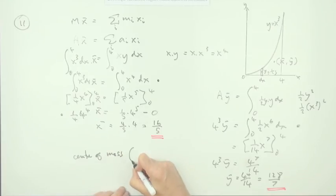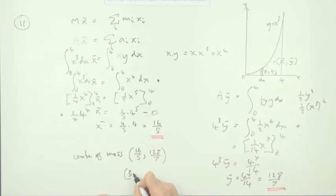The center of mass will be 16 upon 5 and 128 upon 7. Or if you want, that's 3 and 1 fifth, so that's 3.2. And that's 18 and 2 sevenths. And 2 sevenths starts with 0.285...